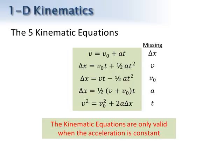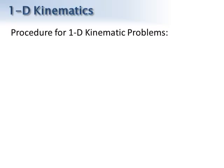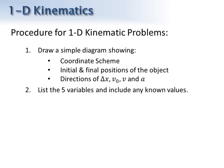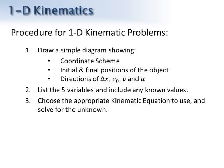Let me give you a procedure for 1D kinematic problems. First, draw a simple diagram that shows the coordinate scheme, the initial and final positions of the object, and the key variables — especially show the directions for vectors like displacement, velocity, and acceleration, because that will help you get the signs right. Next, list the five variables and include any known values. Then choose the correct kinematic equation based on that list, and solve for the appropriate unknown.